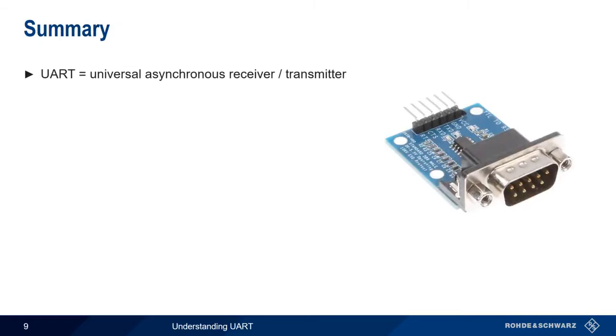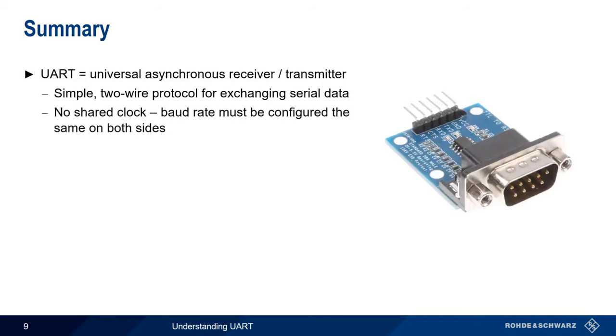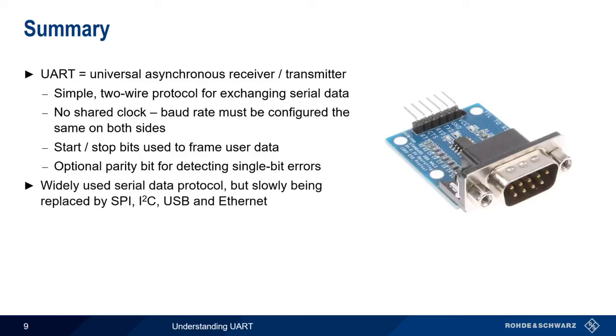Let's summarize what we've learned. UART stands for Universal Asynchronous Receiver Transmitter, and is a simple, two-wire protocol for exchanging serial data. Asynchronous means no shared clock, so for UART to work, the same bit or baud rate must be configured on both sides of the connection. Start and stop bits are used to indicate where user data begins and ends, or to frame the data, and an optional parity bit can be used to detect single-bit errors. UART has been around for a long time and is still a widely used serial data protocol, but in recent years it's been replaced in some applications by technologies such as SPI, I2C, USB, and Ethernet. This concludes our short presentation, Understanding UART. Thanks for watching.